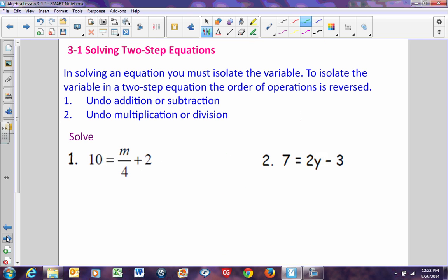Now, when we get into two-step equations, in solving an equation, you must isolate the variable. To isolate the variable in a two-step equation, you reverse the order of operations. Normally, we multiply or divide before we add or subtract. But when you're solving an equation, you're undoing things, and you undo that in reverse. It's like when you first get dressed in the morning, hopefully you put your pants on before you put your shoes on. But when you get undressed at night, you take your shoes off first, and then you take your pants off. You have to undo it in the reverse order that you did it.